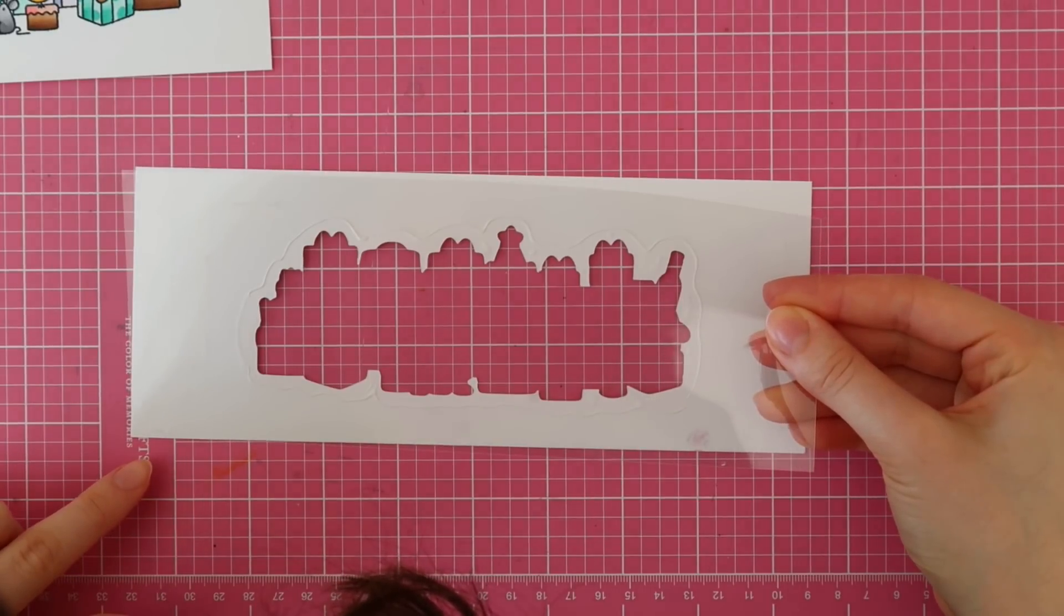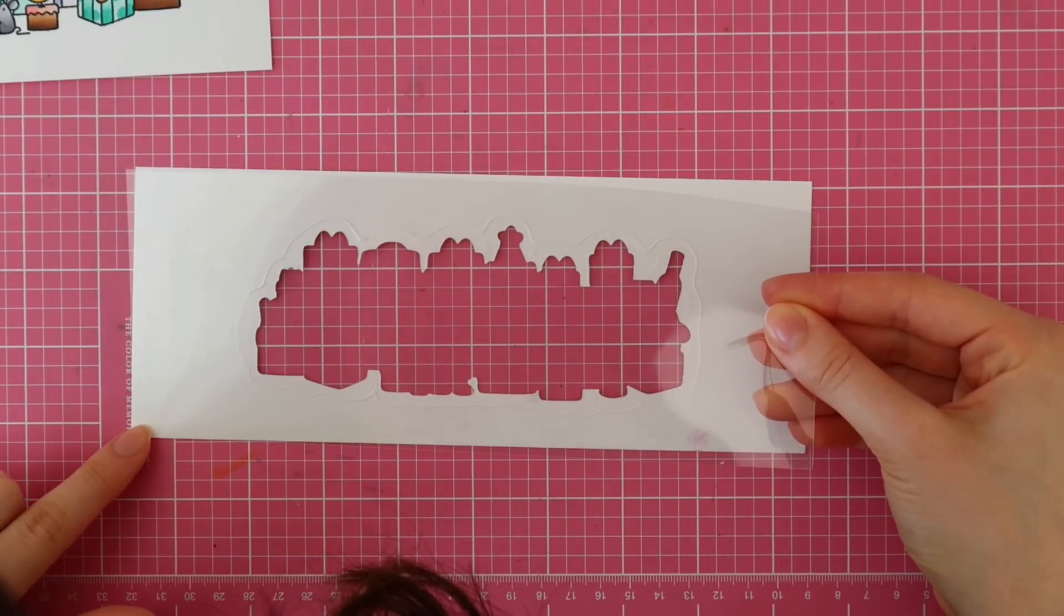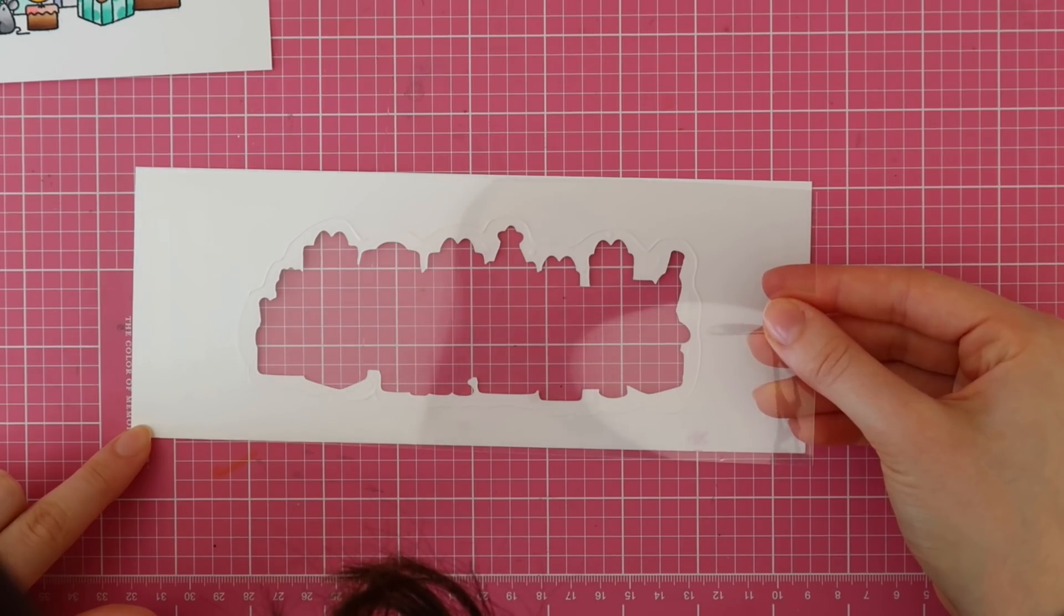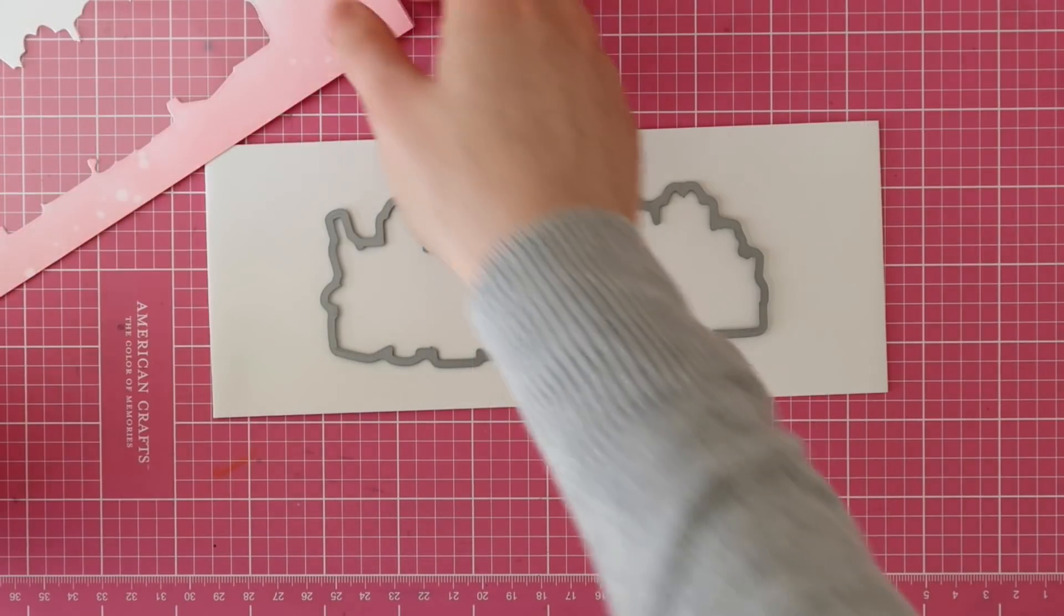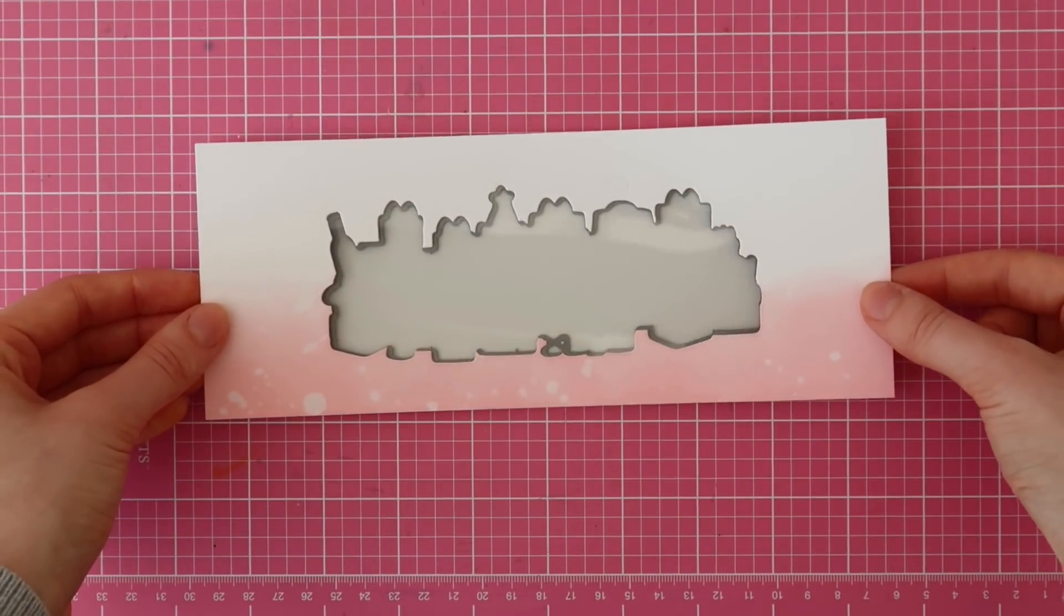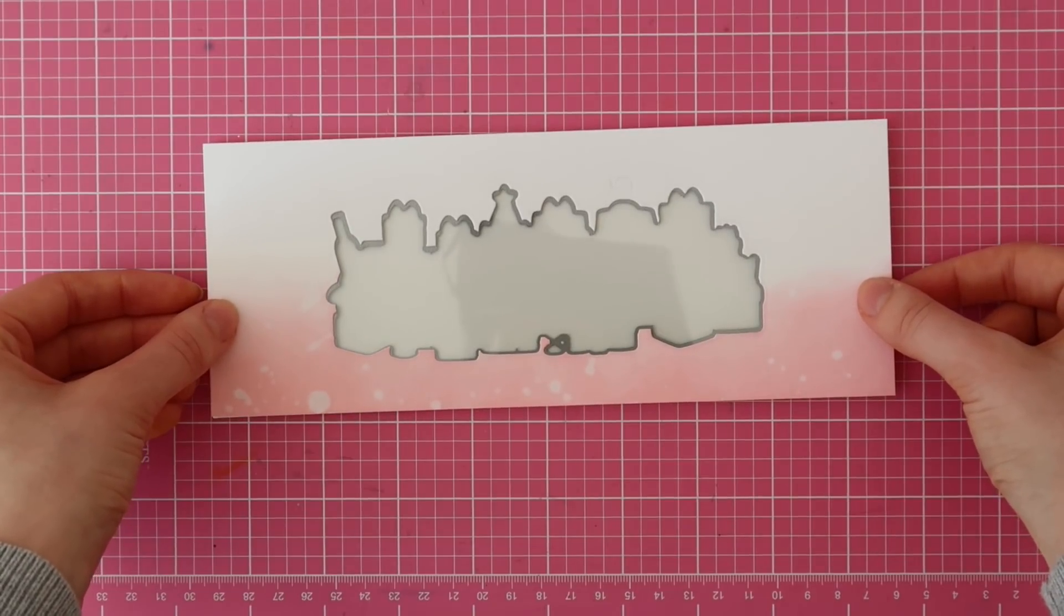So then I am lining up my acetate piece perfectly with this card base. And then I am carefully adhering the acetate on the cardstock.